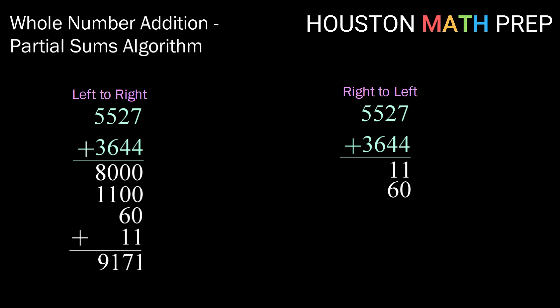Moving to the hundreds place, 500 plus 600 is 1100. And 5,000 plus 3,000 is again 8,000. And adding those up, we get 9,171.